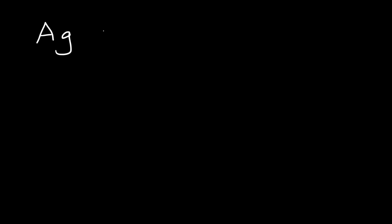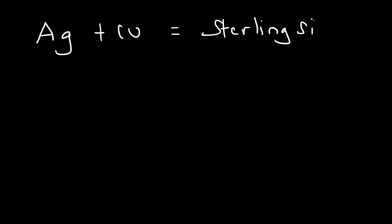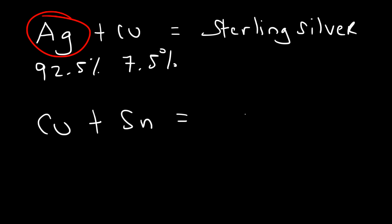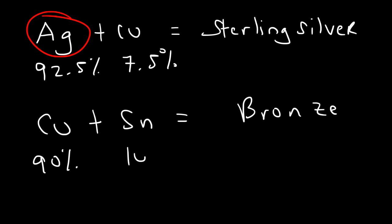There are some other alloys to be familiar with. If we mix silver and copper we get sterling silver — you've probably seen this in your kitchen as silver spoons and forks. It's predominantly silver, approximately 92.5% silver and 7.5% copper. Also, if you mix copper and tin this will create bronze, which is predominantly copper with a small amount of tin.